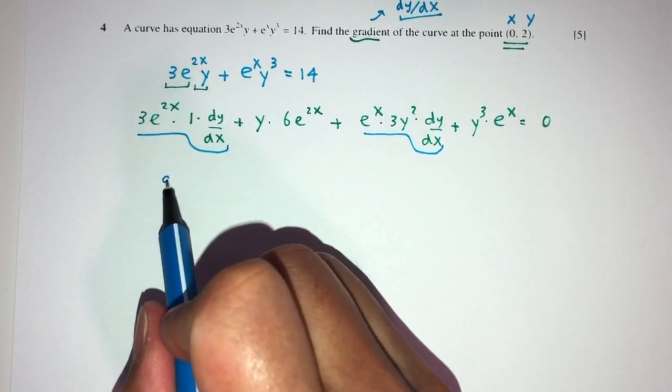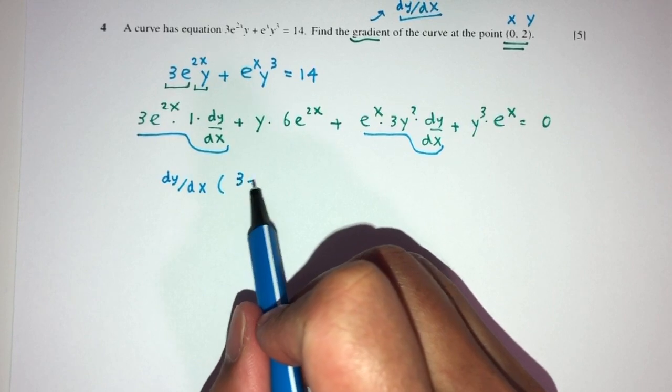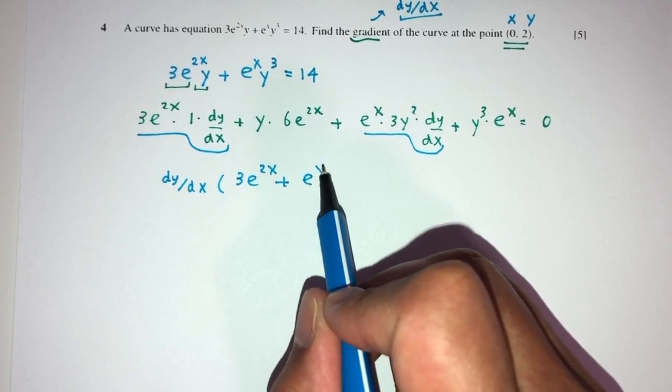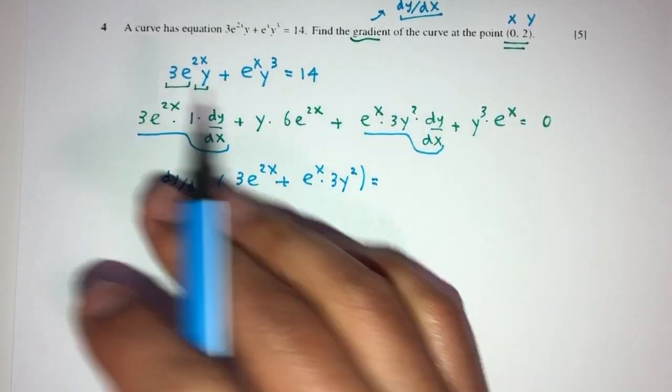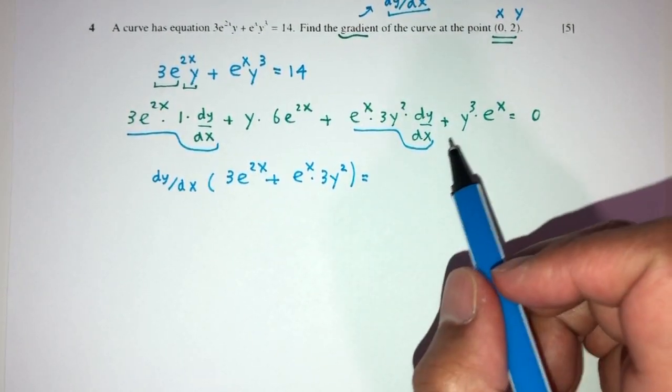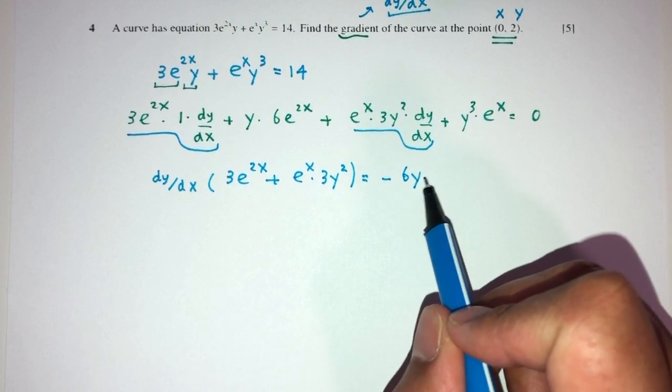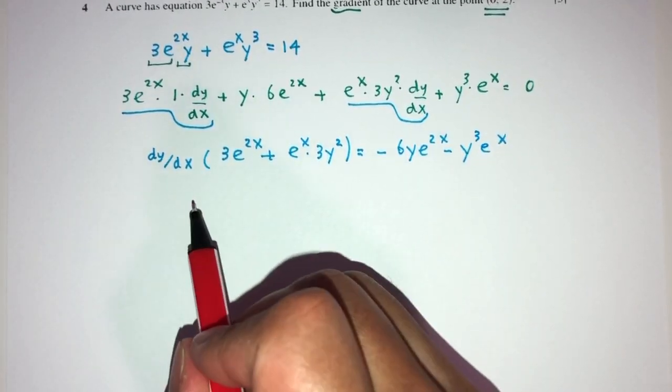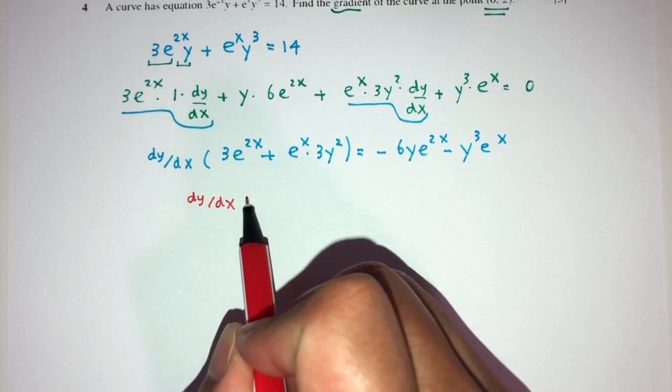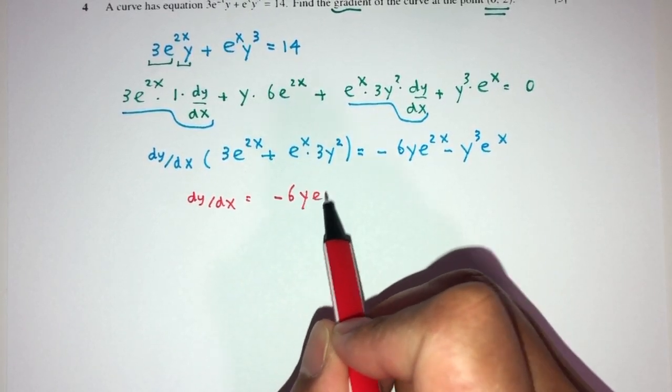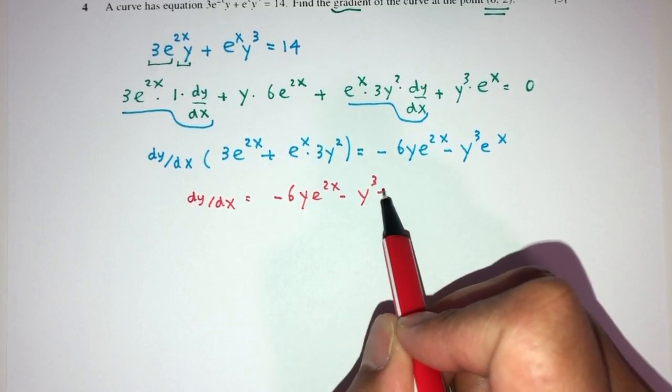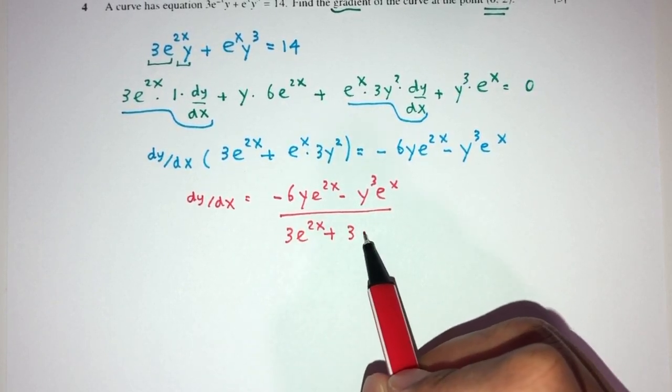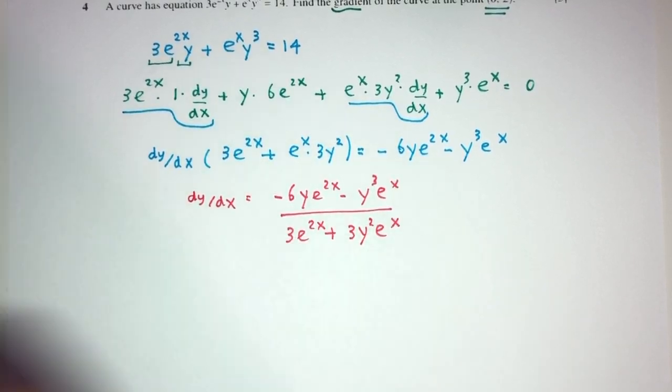We can factorize the dy by dx together. You will have dy by dx factorized: you will have 3 exponential 2xy plus exponential xy times 3y squared equals, send everything to the left hand side, the rest. You will have minus 6y exponential 2x minus y cubed exponential x. Finally, we can find dy by dx will be minus 6y exponential 2x minus y cubed exponential x divided by 3 exponential 2xy plus exponential x times 3y squared. This is your dy by dx.